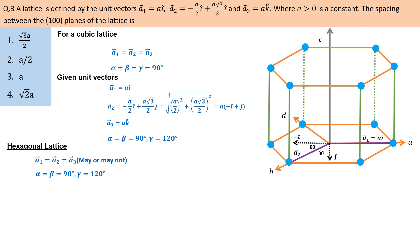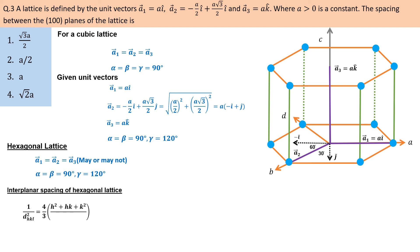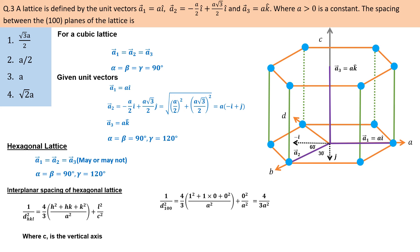The a3 vector is along the vertical C-axis direction. The question involves finding the plane spacing of a hexagonal lattice. Using the d-spacing formula for a hexagonal lattice where C is the vertical axis, and applying it to the (100) plane, the result is root 3 times a divided by 2, which corresponds to option 1.